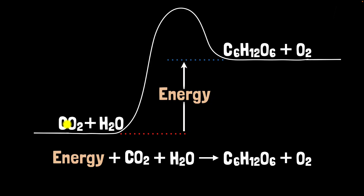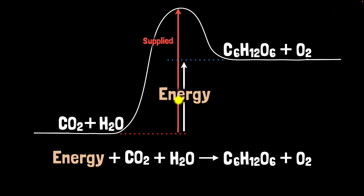Here's how we can think about it more concretely. To rearrange the atoms, you need to first break these chemical bonds. Breaking bonds is kind of like pulling magnets apart — it requires energy; you need to supply energy. In this particular diagram, the amount of energy you need to supply is about this much — the hill represents the amount of energy that you need to supply.